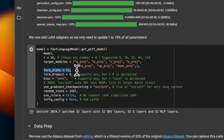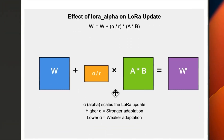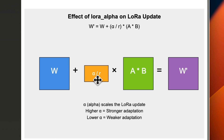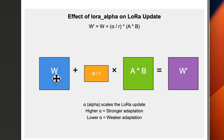The second hyperparameter is LoRA alpha, which controls how much contribution these LoRA adapters are going to have on the final weights of the model. Here we have the matrix that results from multiplying those two LoRA matrices. We need to add this back to the original frozen weights, but how much that contribution is controlled by LoRA alpha. If you set LoRA alpha to a higher value, that means stronger adaptation; if you keep it to a lower value, that means weaker adaptation.